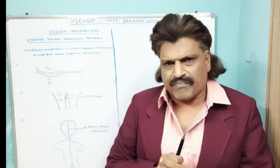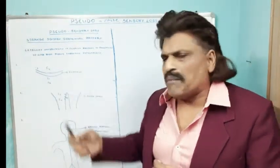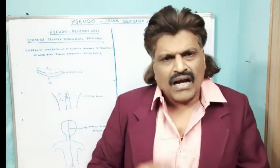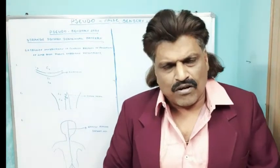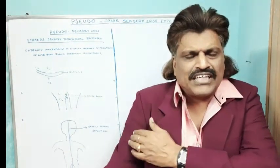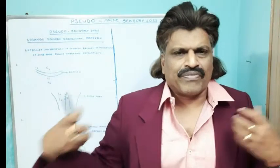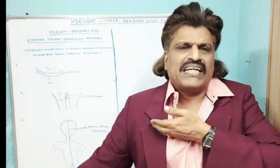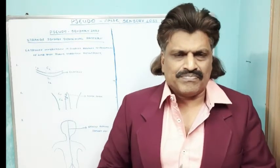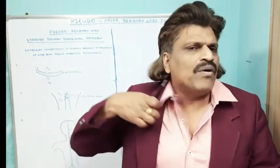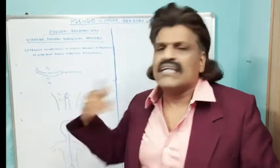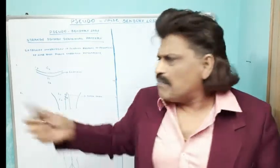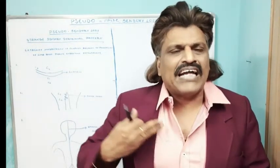In the upper limbs, because of the migration during embryonic development, what happens is that C4, C5, C6, C7, C8, but T1 and T2 come below the clavicle. So above the clavicle it is C4 and C5, but immediately below the clavicle it is T1 and T2.